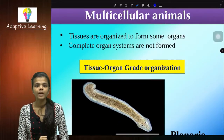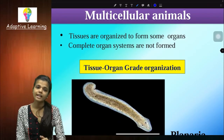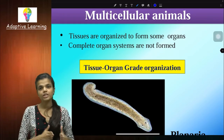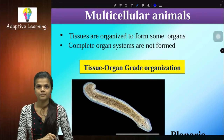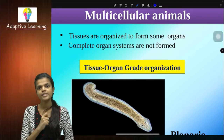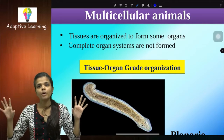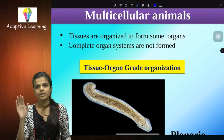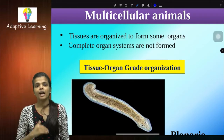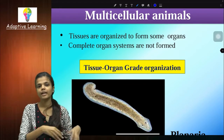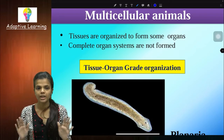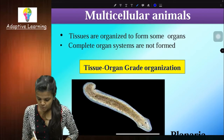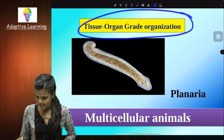Then in multicellular, what will happen after cell-tissue grade? Tissues organize to form organs. Organs are present but they are all doing their work independently — there is no coordination. For example — hypothetically — think about the kidney doing its job, the digestive tract doing its job, but coordination is nothing. Organs have functions but not in coordination with each other. The grade is tissue-organ-grade organization and this example is Planaria.